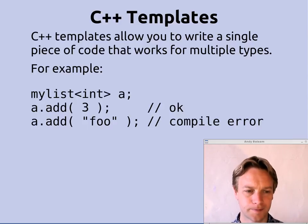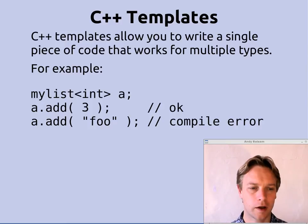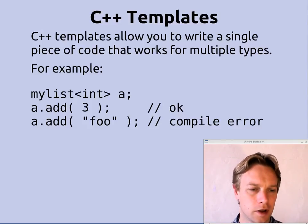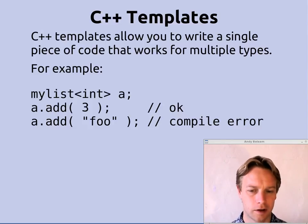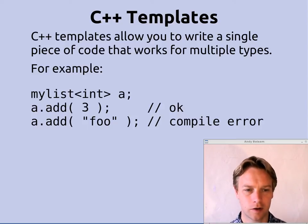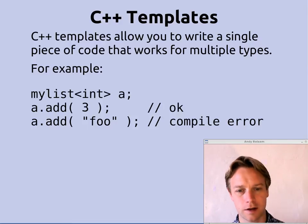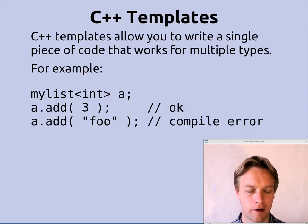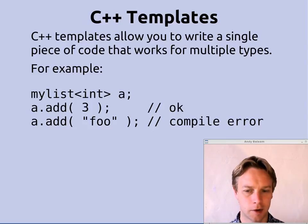If you're used to Java, that looks weird. We can call add on A because the myList template has an add method on it. If you pass in three, that's okay because this is not just a myList, this is a myList of ints, so the add method takes ints. If you try and add foo to myList, that's a compile error because foo is not an int — this is a myList of ints.